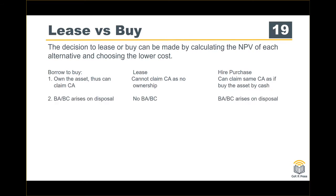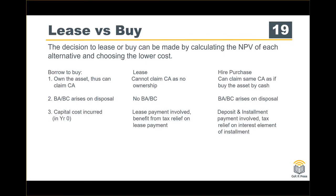For balancing allowance and balancing charges: if you borrow to buy the asset and then dispose of it, you will have a balancing charge or balancing allowance. For lease, there is nothing on it. For capital costs incurred, very importantly: in your NPV calculation, please put the capital cost incurred as a cash outflow at year zero.